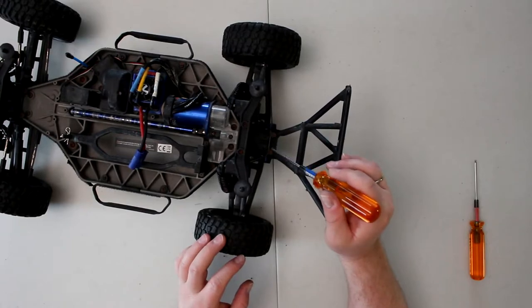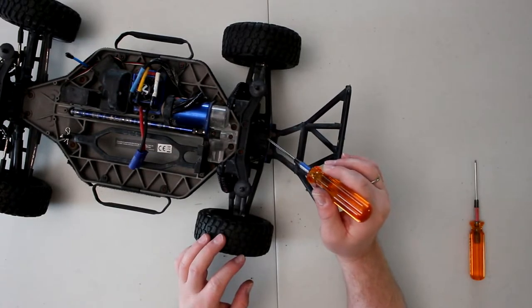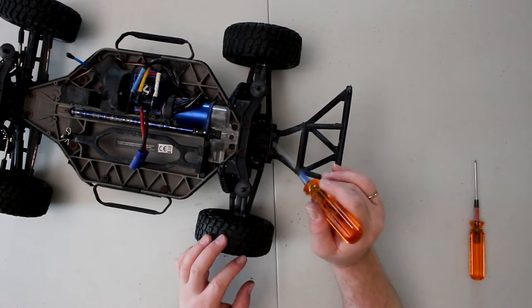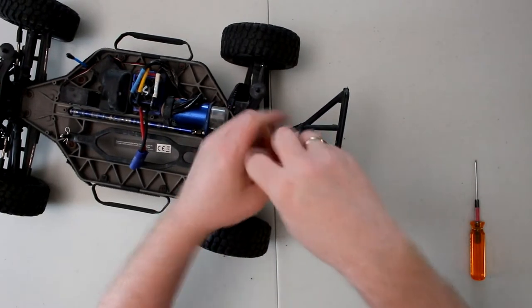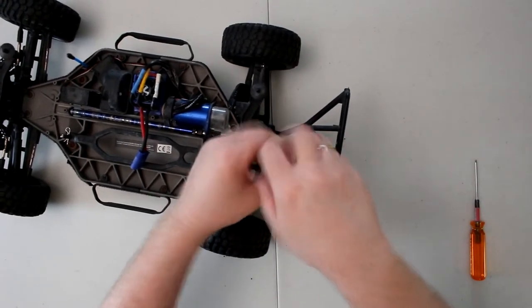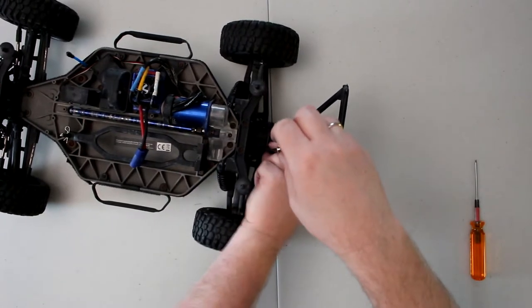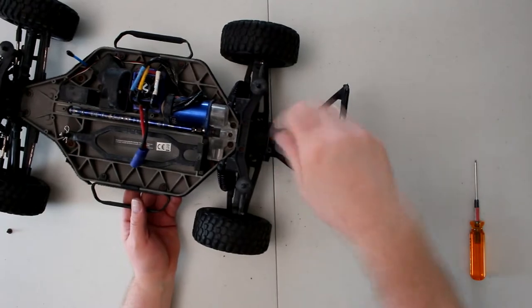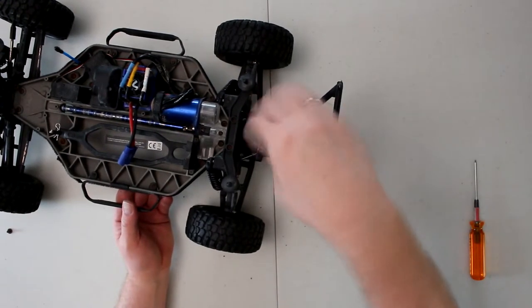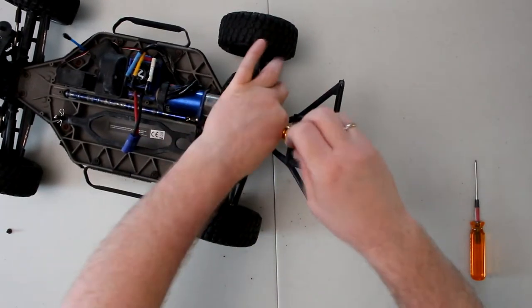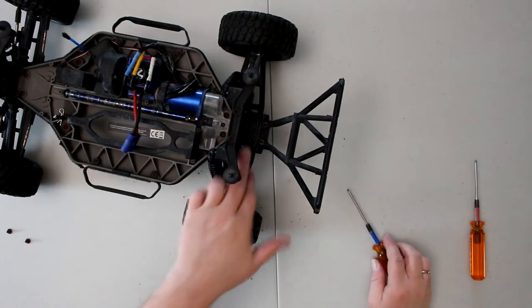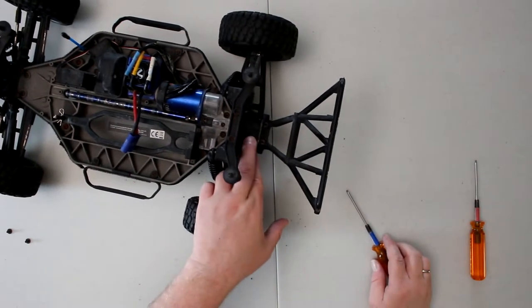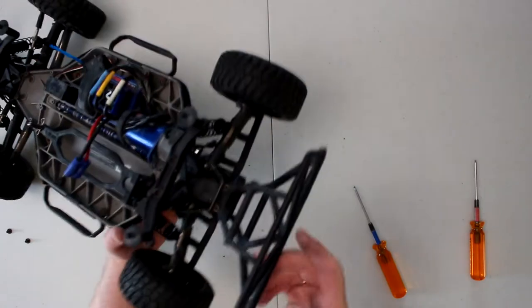You'll have two screws here to remove and two more here. Now these that hold the sway bar are 2.5mm, and you'll notice the sway bar just physically starts moving.